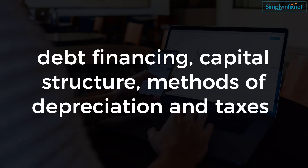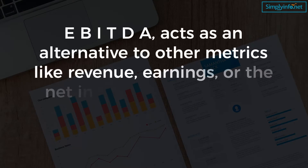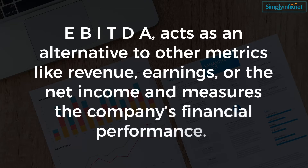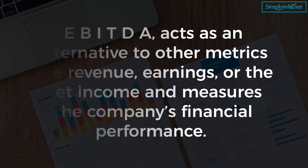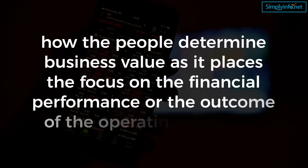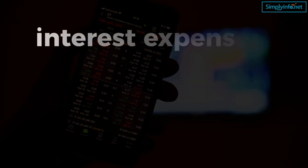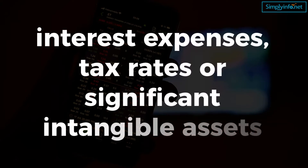It can be seen as a proxy for the cash flow from the entire company's operations. EBITDA acts as an alternative to other metrics like revenue, earnings, or net income, and measures the company's financial performance. This metric is how people determine business value, as it places the focus on the financial performance or the outcome of operating decisions, by removing the impacts of non-operating decisions such as interest expenses, tax rates, or significant intangible assets.